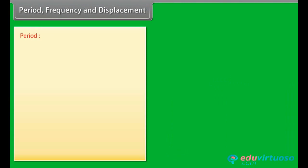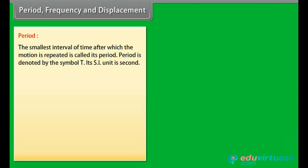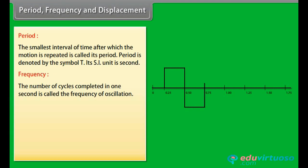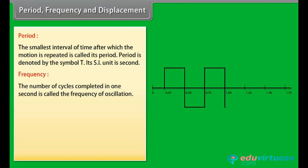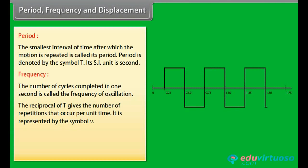Period: the smallest interval of time after which the motion is repeated is called its period, denoted by T. Its SI unit is second. Frequency: the number of cycles completed in one second is called the frequency of oscillation. It is represented by the symbol V, and the relation between V and T is V = 1/T. The unit of V is per second and is called Hertz.